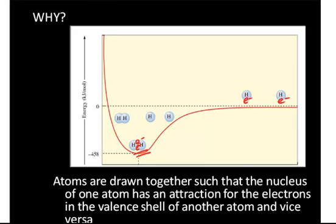If the atoms get pushed together closer, the energy starts going up quite rapidly due to the repulsion between the positively charged nuclei — nuclear repulsion. So there's a sweet spot where there's an attraction between the negatively charged electron and the positively charged nucleus, versus the repulsion of the two electrons and the two protons because like charges repel. This is how we end up with covalent molecules.